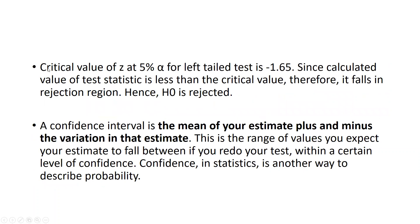To interpret this result: the critical value of z at 5% alpha for a left-tail test is −1.65. Since our calculated test statistic (−2) is less than the critical value (−1.65), it falls in the rejection region. Therefore, the null hypothesis is rejected. Confidence interval is the range of values you expect your estimate to fall between within a certain level of confidence.